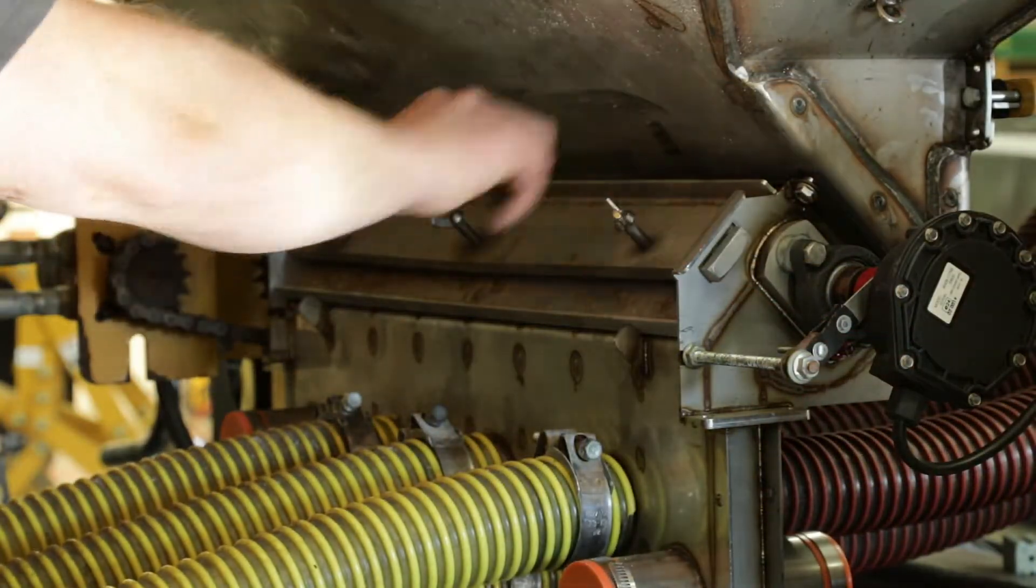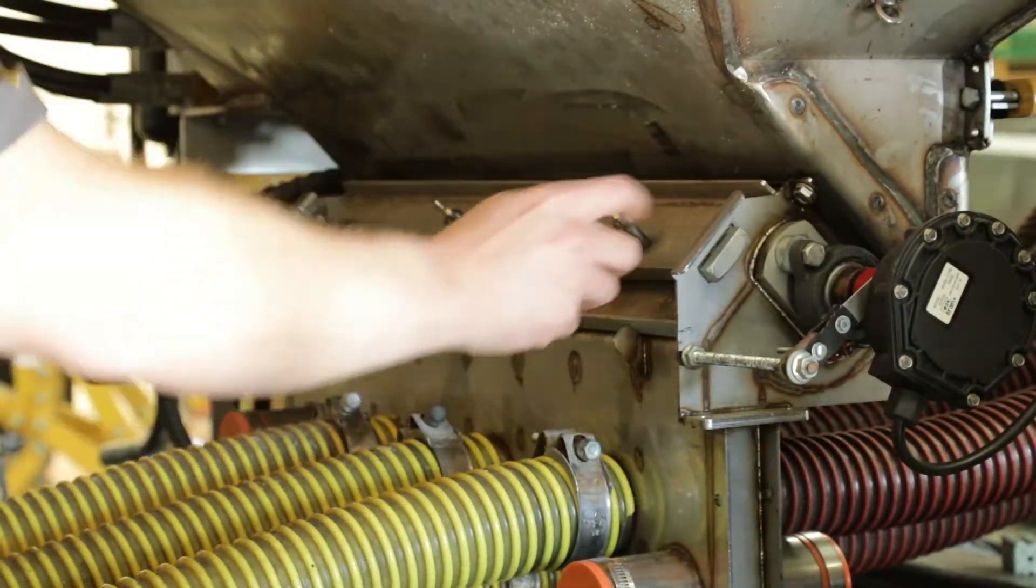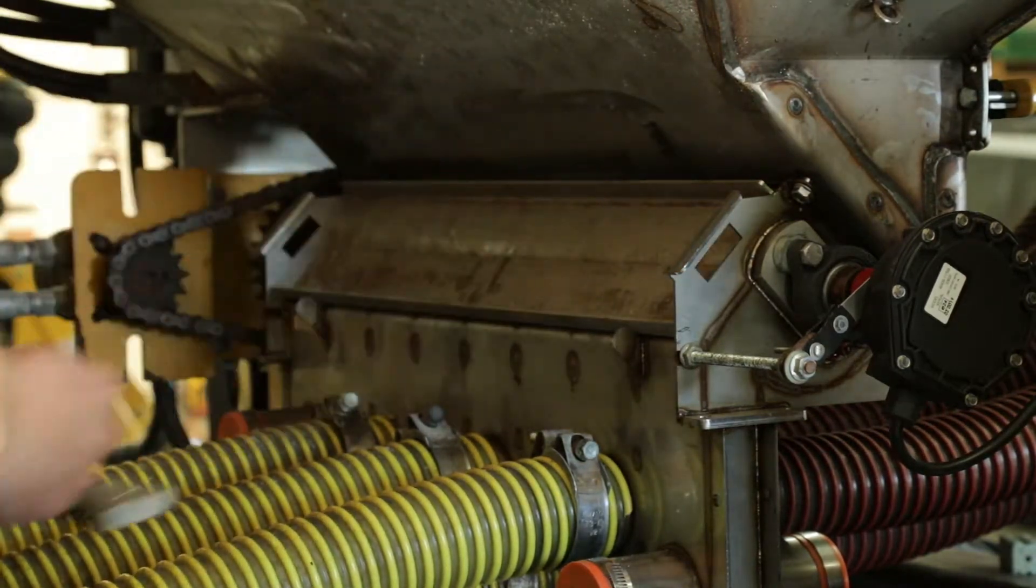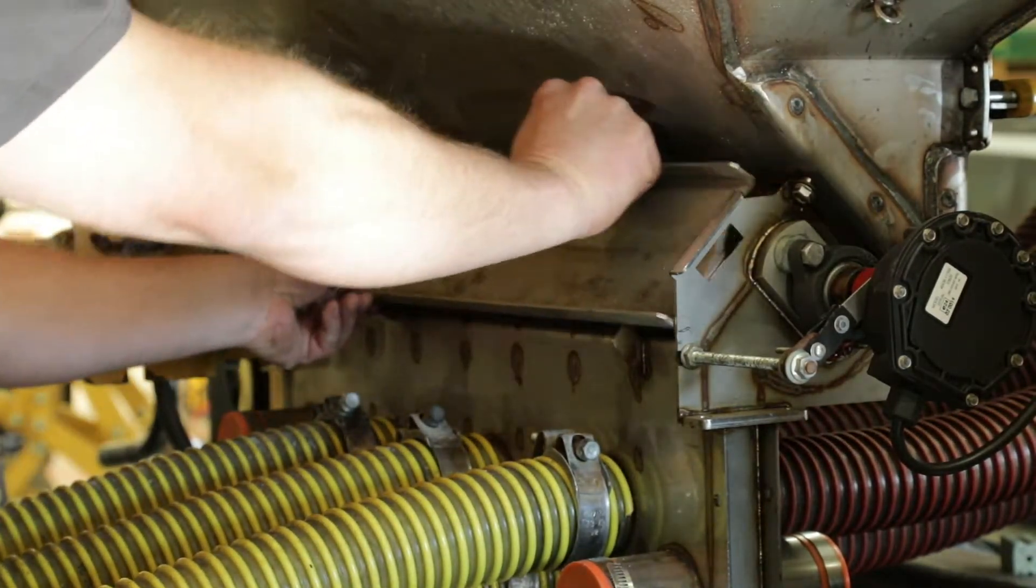To access the rear of the meter bodies you will loosen these three wing nuts. Pull the bar out and this plate simply lifts out.